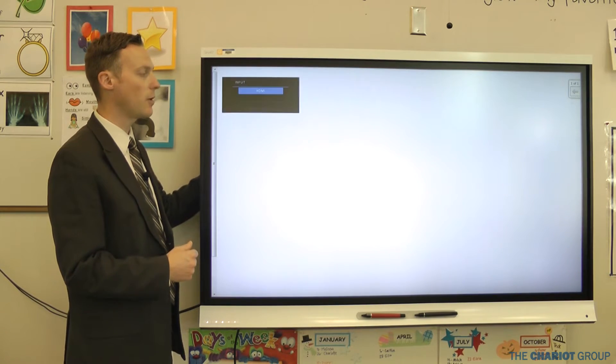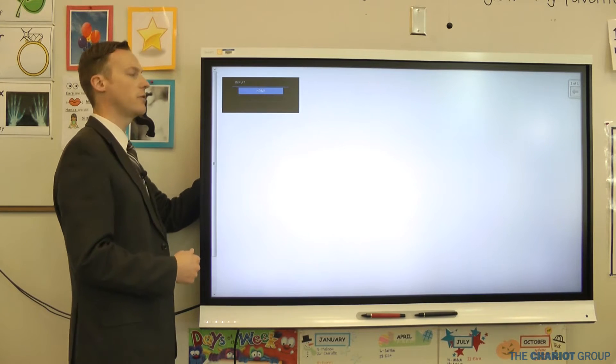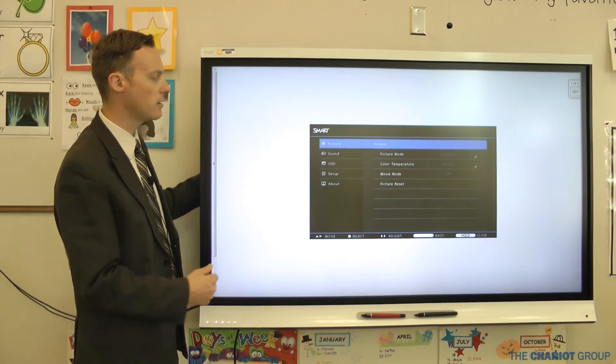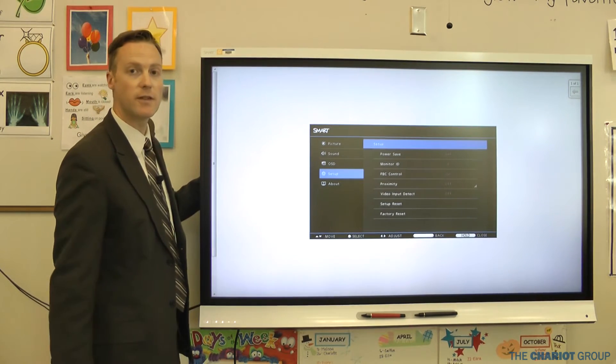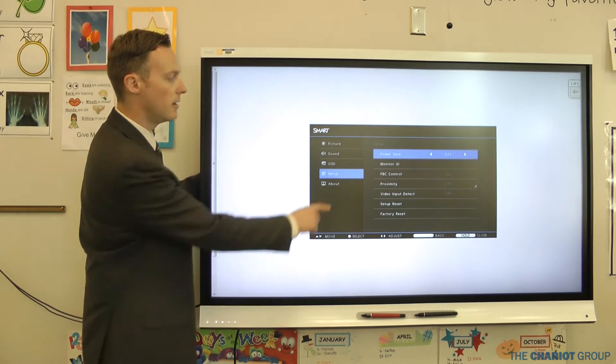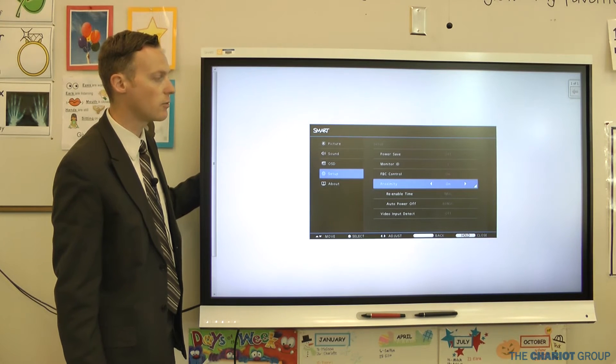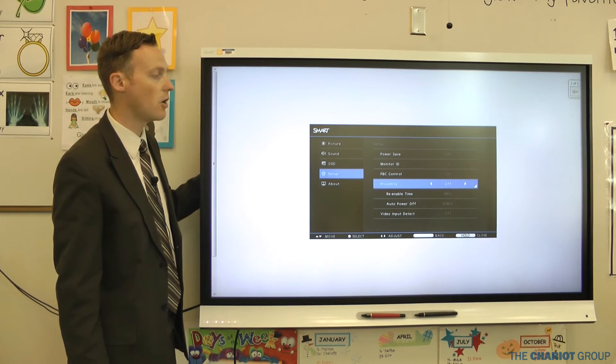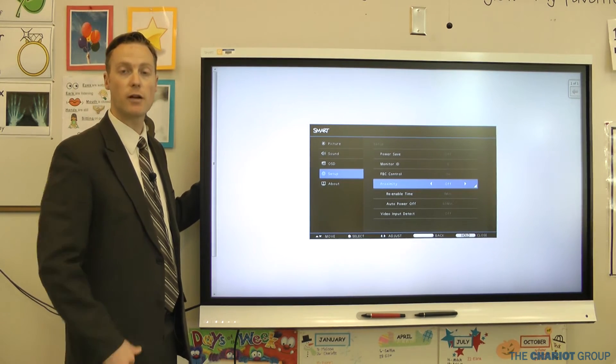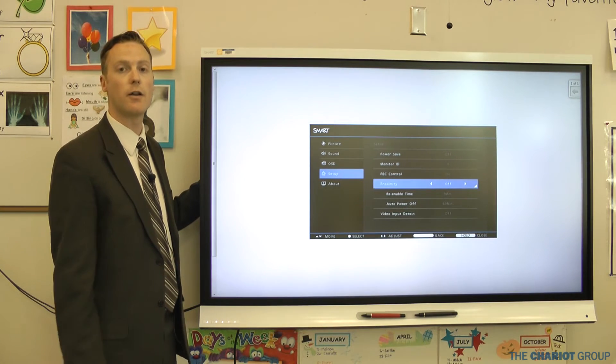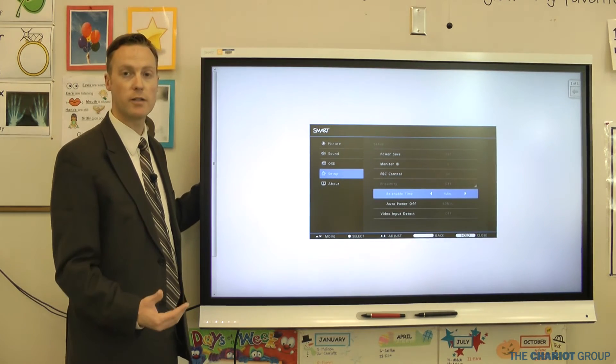So if I press that again, whoops, helps if I press the right button. So I'm going to press the menu button and I'm going to come down to the setup, then I'm going to hit set, and then I'm going to come down to where it says proximity and I'm going to change that. I'm going to hit set or right and left until that says off, and that turns off the proximity sensor so it will no longer turn on automatically when somebody walks near it.